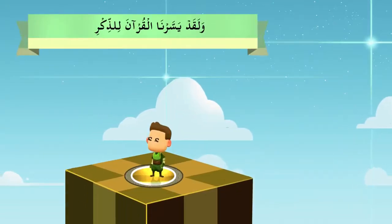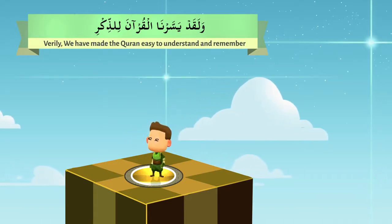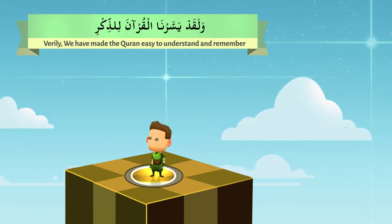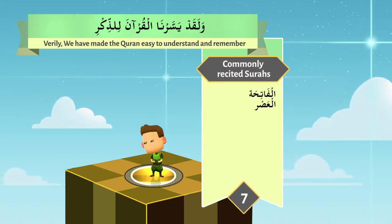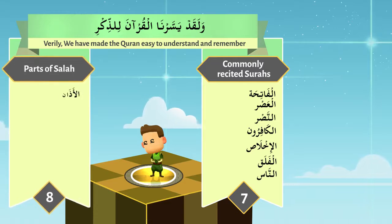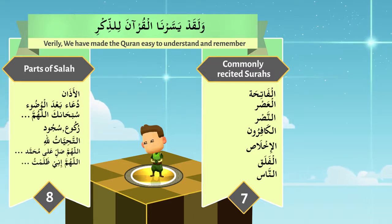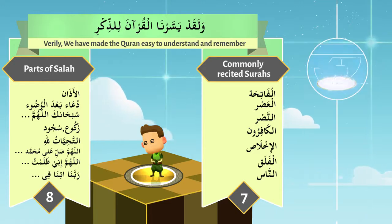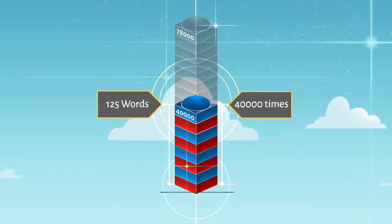Allah says repeatedly in the Quran: Verily, we have made Al-Quran easy to understand and remember. Indeed it is amazingly easy. If you learn the meaning of every word from a typical Salah — that is 7 commonly recited Surahs: Surah Al-Fatihah, Wal-Asr, Idha Jaa Nasr Allah, Qul Ya Ayyuhal Kafirun, Qul Huwa Allahu Ahad, Qul A'udhu Birabbil Falak, Qul A'udhu Birabbil Nas — and the parts of Salah such as Adhaan, Dua after Wudu', starting prayer, and what we say in Ruku', Sujood, At-Tahiyyatu Lillah, Allahumma Salli Ala Muhammad, Allahumma Inni Zolamtu Nafsi, and Rabbana Aatina — along with extremely simple grammar using TPI — then you learn 125 words that occur 40,000 times, covering 50% or half the words in every line.